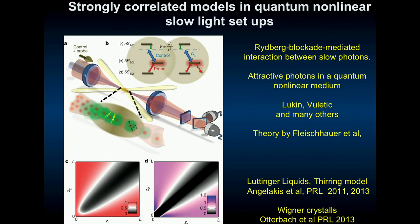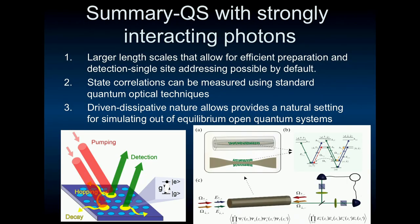As I mentioned earlier, this is not the only way to go. You can have quantum nonlinear many-body physics for photons in slow light setups, and Rydberg atoms. There have been experiments by various groups, and also theory by people in the audience, in doing interesting many-body states here. I don't really have time on this, but it's also a nice system to do, interesting, strongly-correlated states of light. In summary, we have larger length scales that allow for efficient preparation, detection, and single-site addressing. This is something I should highlight compared to optical lattice in the sense that if the cavities can be further apart, there's no optical wavelength limitation here. The state correlations are measured by using standard quantum optical techniques, and driven dissipative nature is in here and here, so out of equilibrium should be doable.